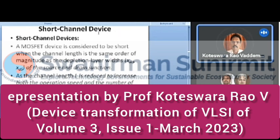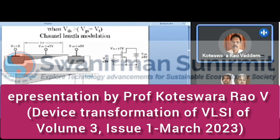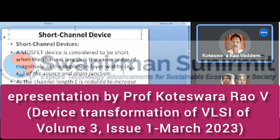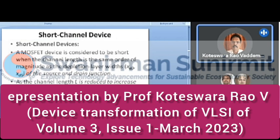The above discussions apply to long channel devices — standard MOSFETs. Now let us consider short channel devices. A MOSFET is considered short when the channel length is of the same order of magnitude as the depletion region widths — XD_D (depletion width between channel and drain) and XD_S (depletion width between channel and source), together approximately 2d. As channel length is reduced, operation speed and the number of components on the chip increase, but short channel effects arise.